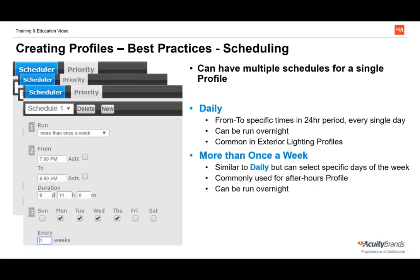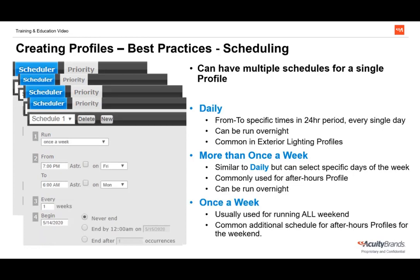More than once-a-week schedules are similar to daily schedules but allow specific days of the week to be selected. These are common for after-hours profiles in spaces unoccupied all weekend. For example, Monday through Thursday might be selected — not Friday — because a second once-a-week schedule handles Friday night through Monday morning. Once-a-week schedules are typically used for running profiles all weekend, since starting Friday and ending Monday is one long occurrence per week.